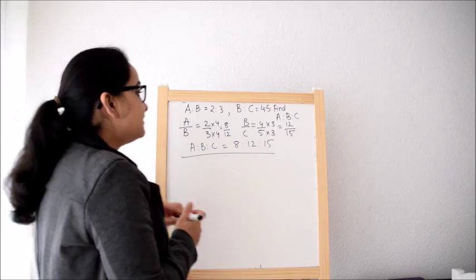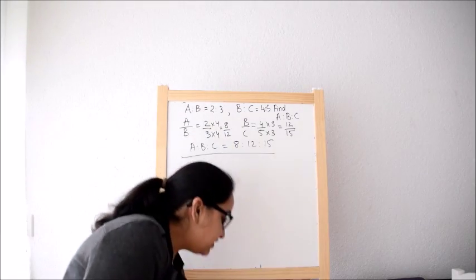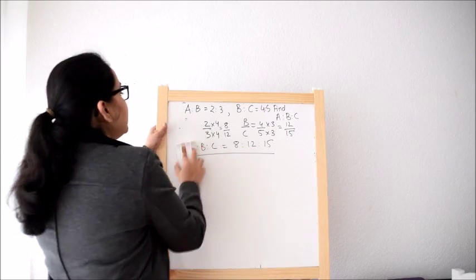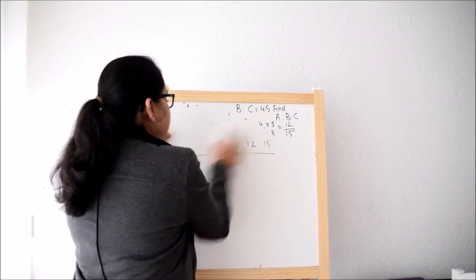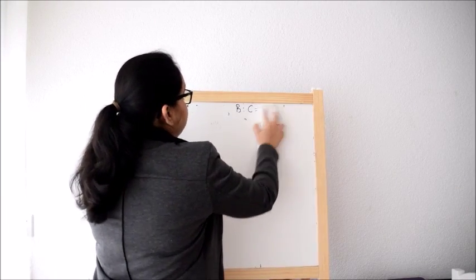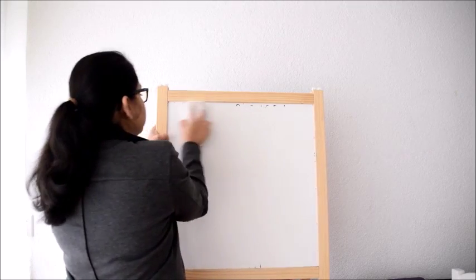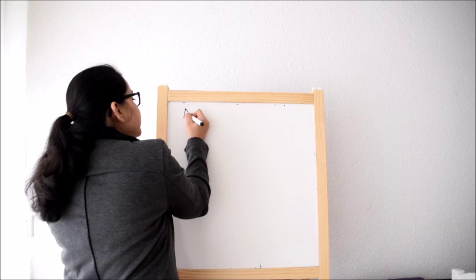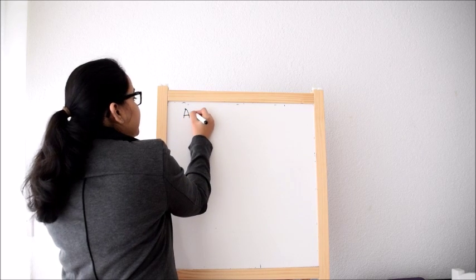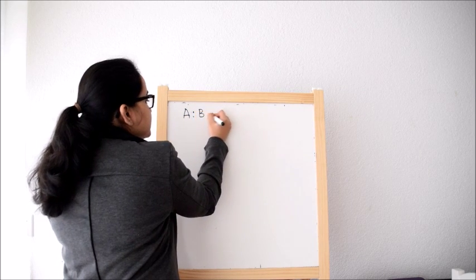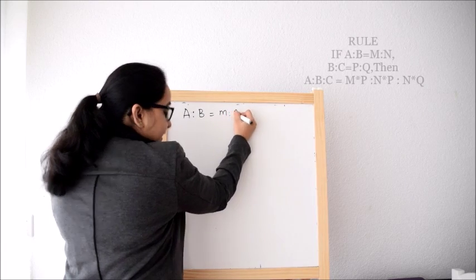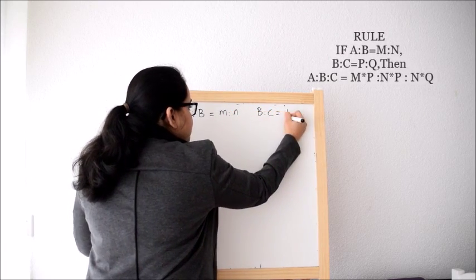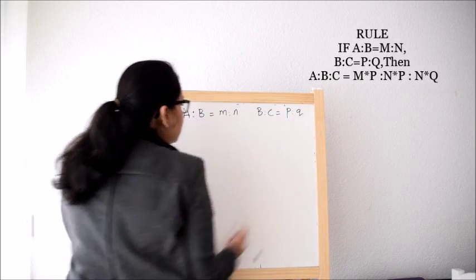Now I have a rule which you can remember. This was an easy sum so you could solve it easily. Now I have one rule for this. If you want you can remember the rule. Now the rule says that if A is to B is equal to M is to N and B is to C is equal to P is to Q.